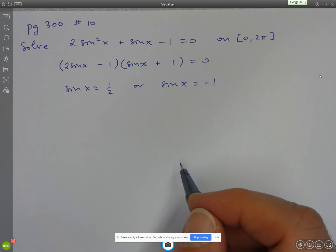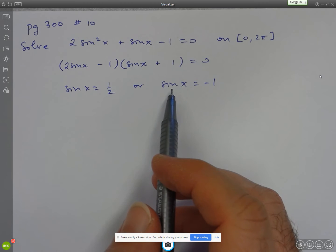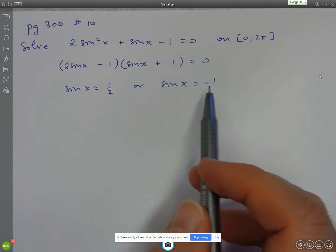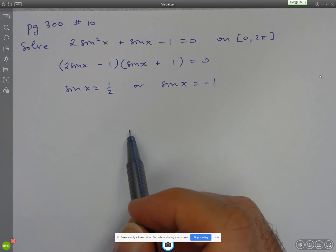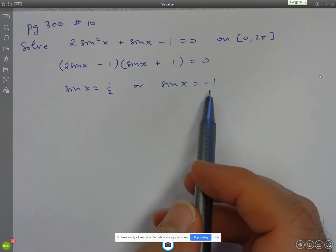All right. So I've accomplished step 1 of solving a trigonometric equation, which was to isolate into a singular trig expression equal to some number. All right. And I noticed that both of these are going to correspond to special angles.